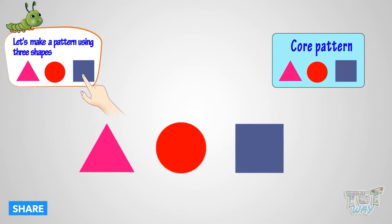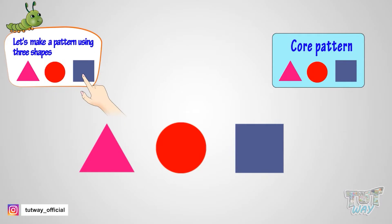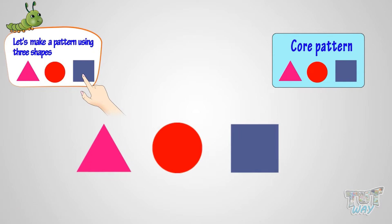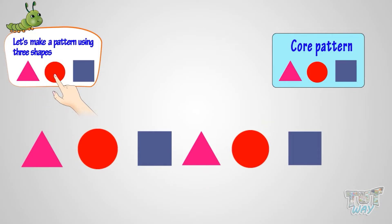So this will be our core pattern, or the pattern that we will be repeating. Now let's continue making it. We will use all three shapes again — triangle, circle, square. Looking nice!